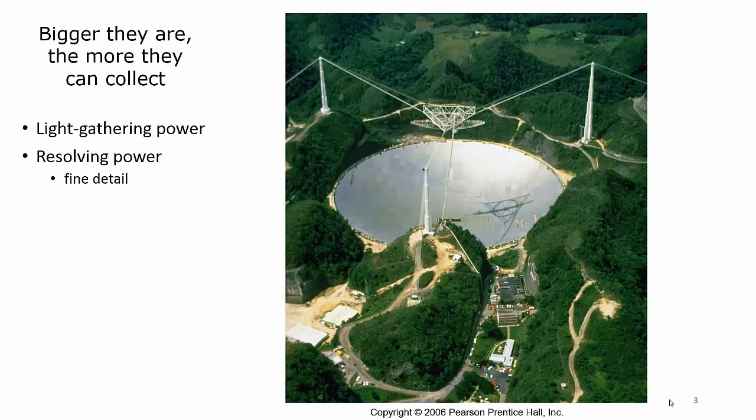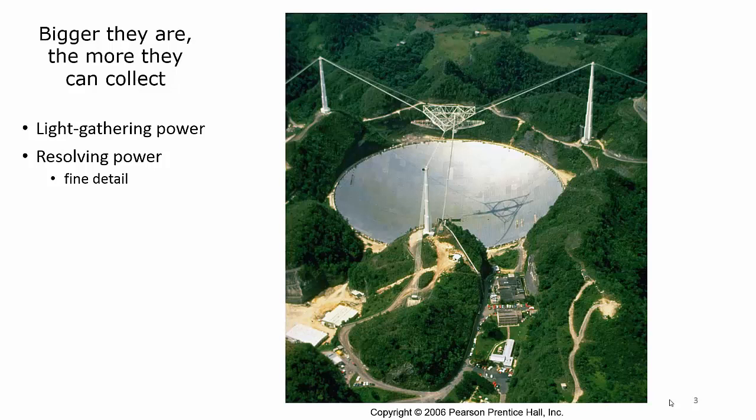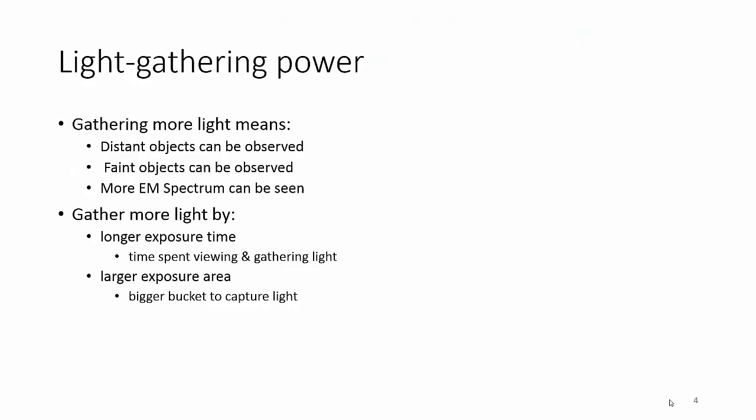For telescopes, the bigger the better. The bigger they are, the more they can collect. The more they can collect, the better resolving power they have. How much detail are you able to see? So if you're bigger, you can gather more light. Gathering more light means that you can see objects that are far away. You can see objects that would normally be too faint. And you could possibly see more of the EM spectrum.